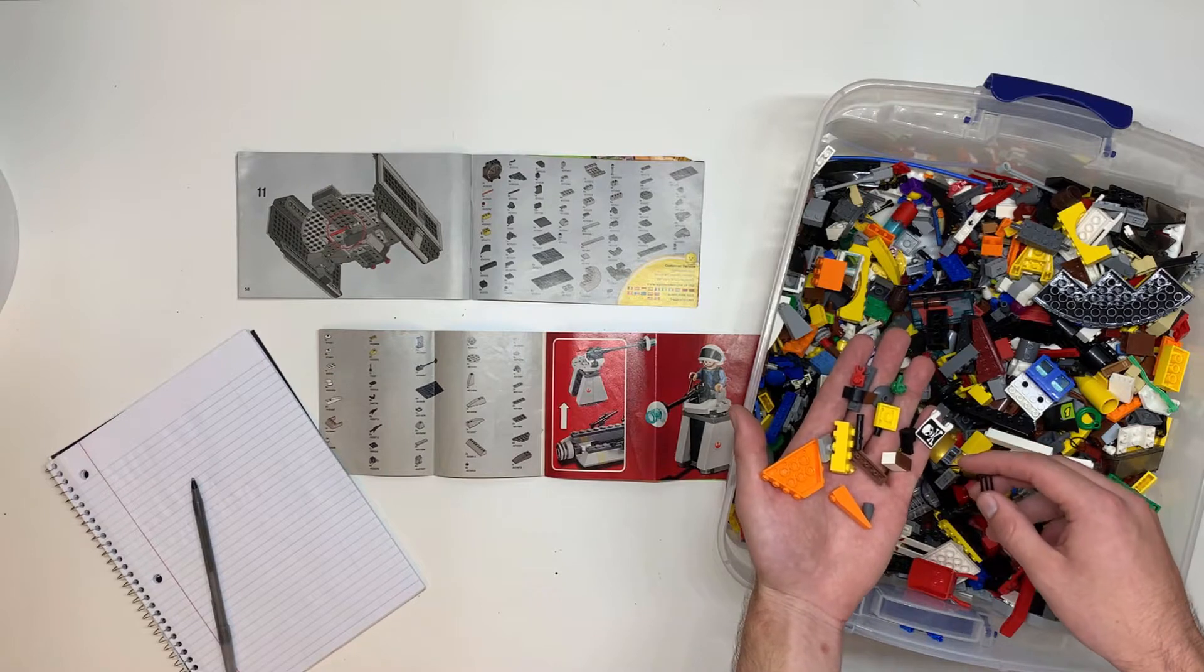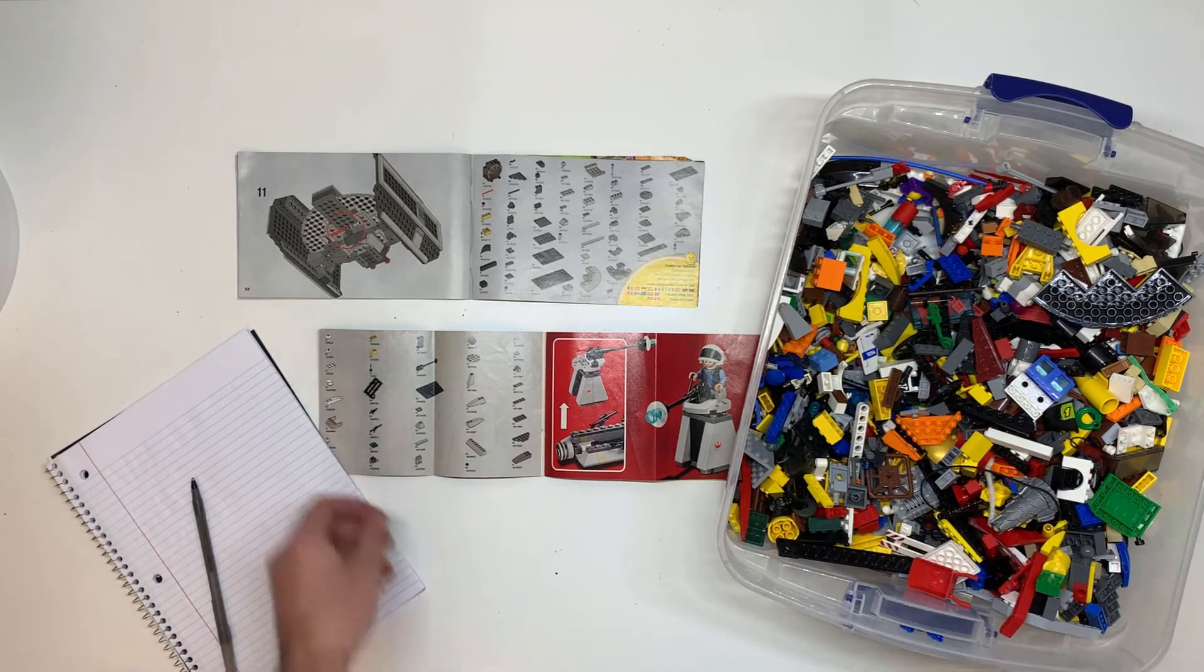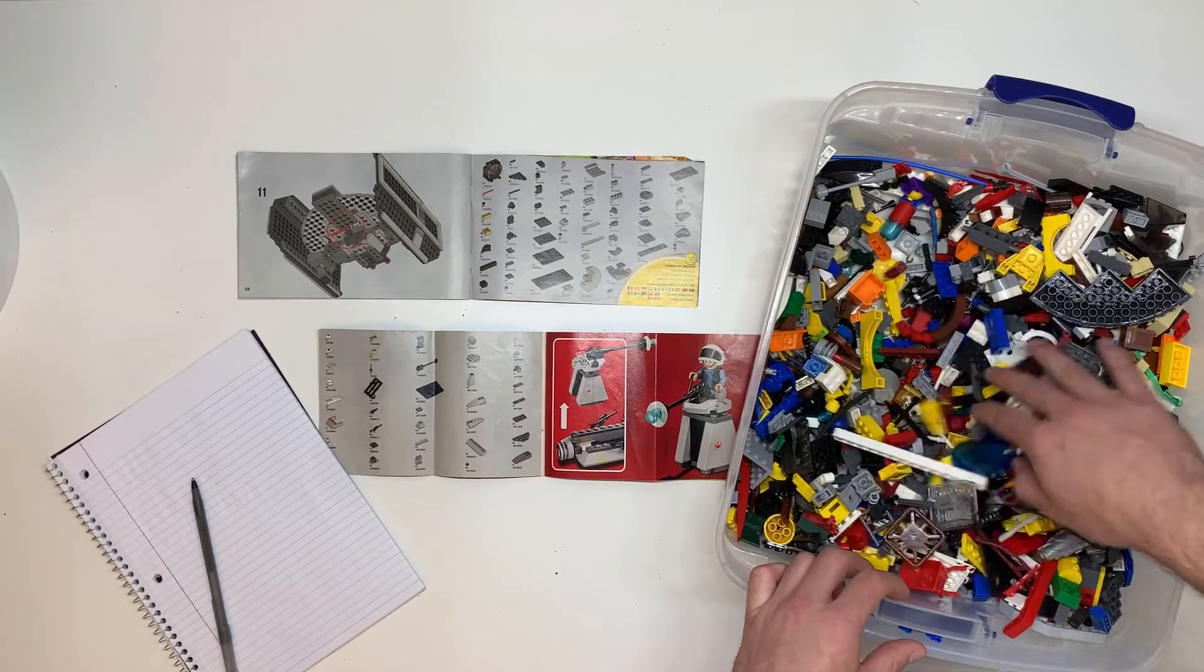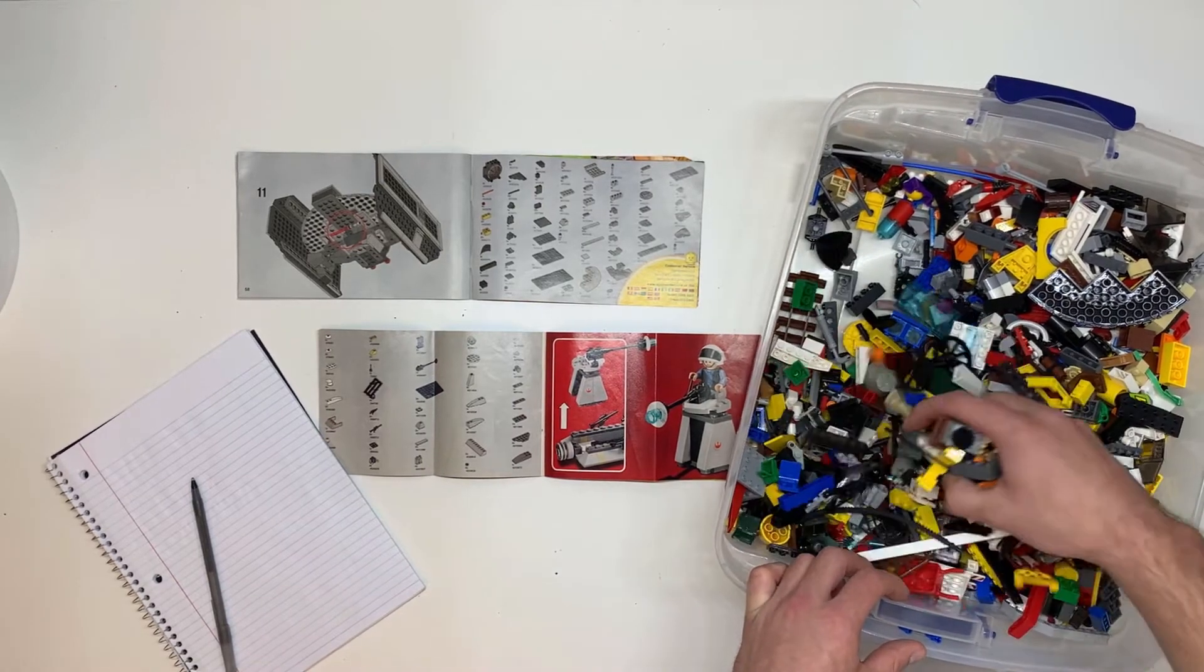The pieces that do not match simply go back in the bin. Repeat the process with all the other bins until the sets are completed.